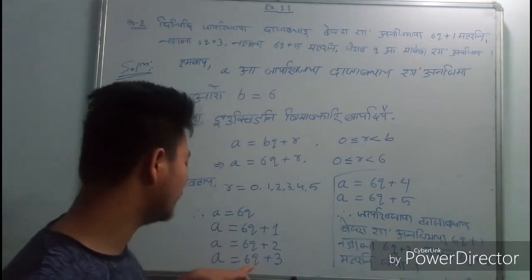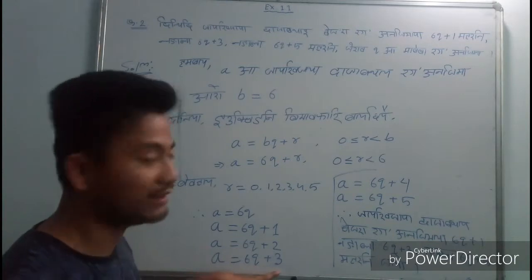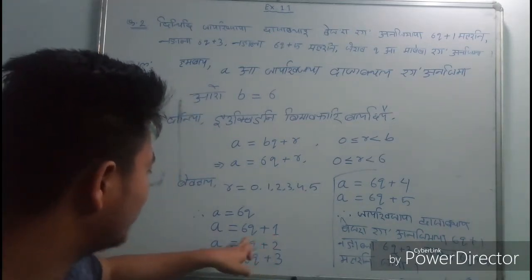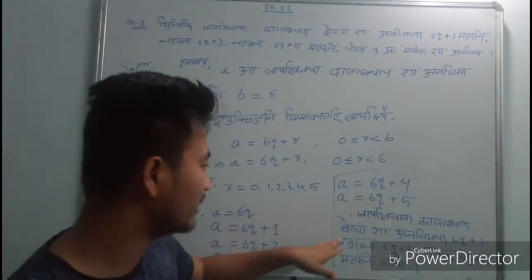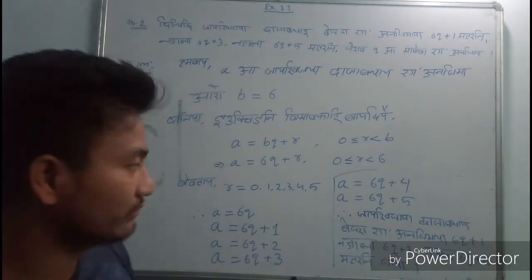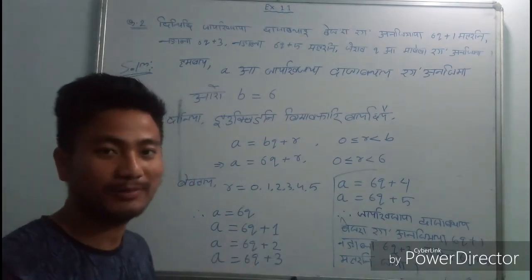So the reason for this example is to show that we get 6q plus 1, 6q plus 3, and 6q plus 5. This video will be done by the end.